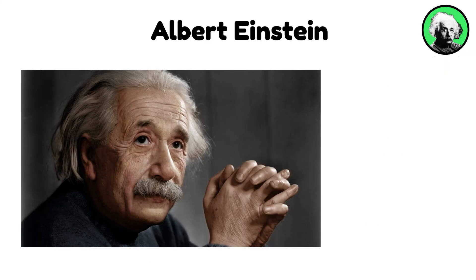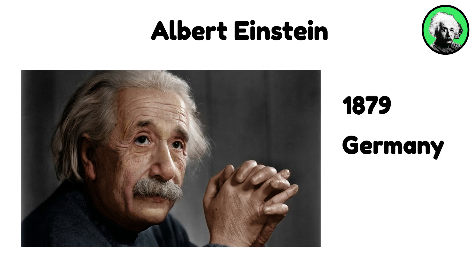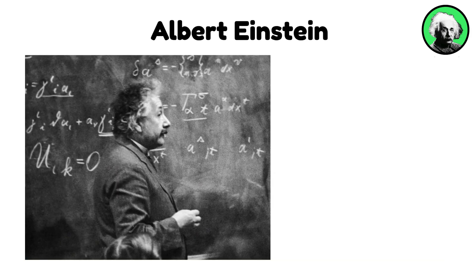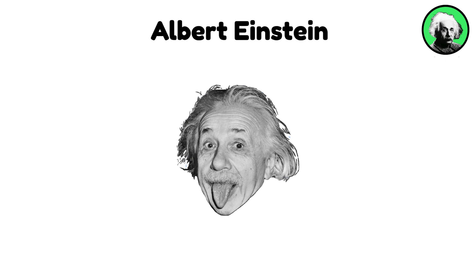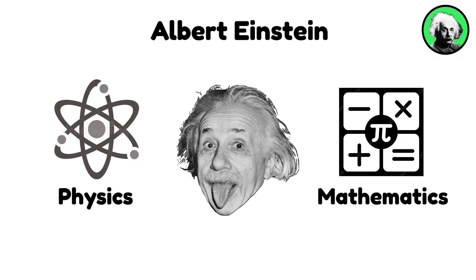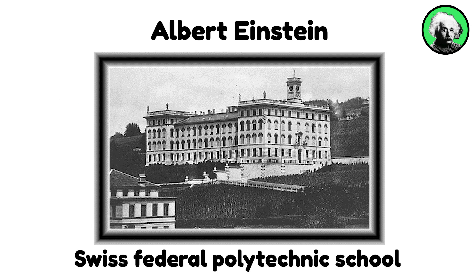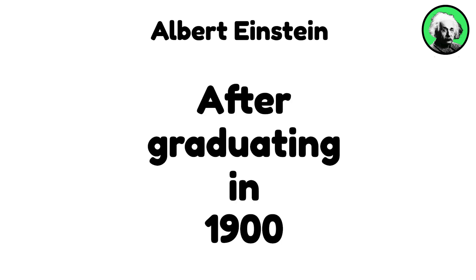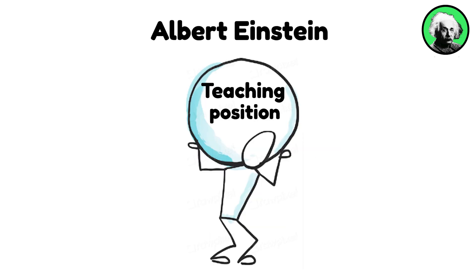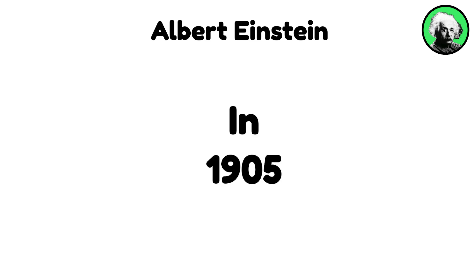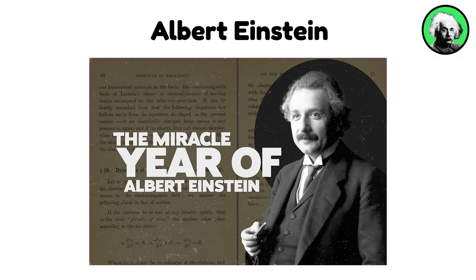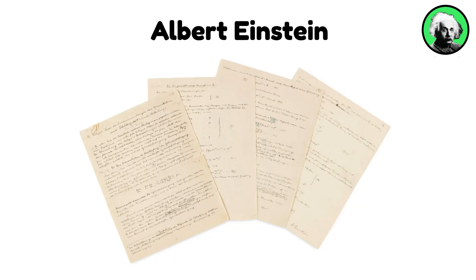Albert Einstein, born in 1879 Germany, is one of the most influential physicists in history, renowned for his groundbreaking contributions to theoretical physics. Einstein showed an early interest in mathematics and physics, which he pursued at the Swiss Federal Polytechnic School in Zurich. After graduating in 1900, he struggled to find a teaching position and eventually took a job at the Swiss Patent Office in Bern. In 1905, often referred to as his Miracle Year, Einstein published four seminal papers that significantly impacted the field of physics.